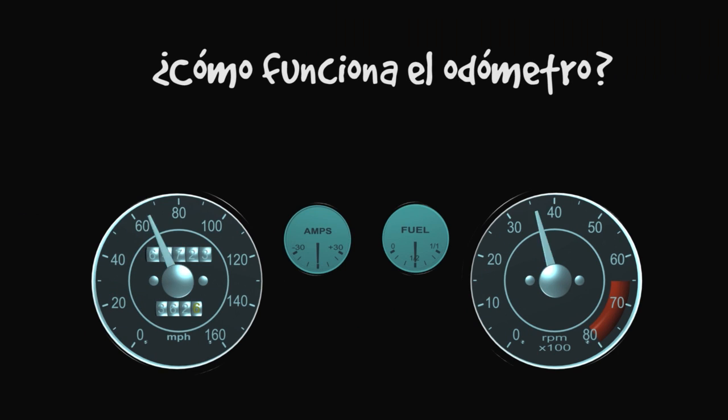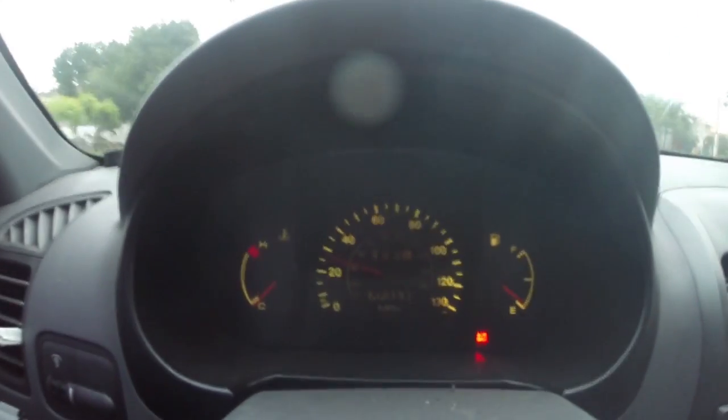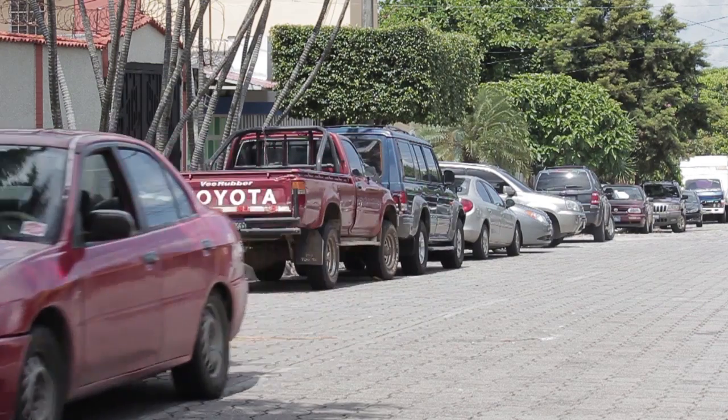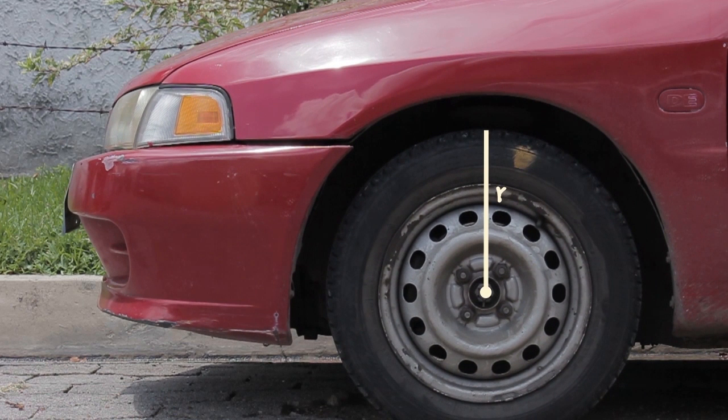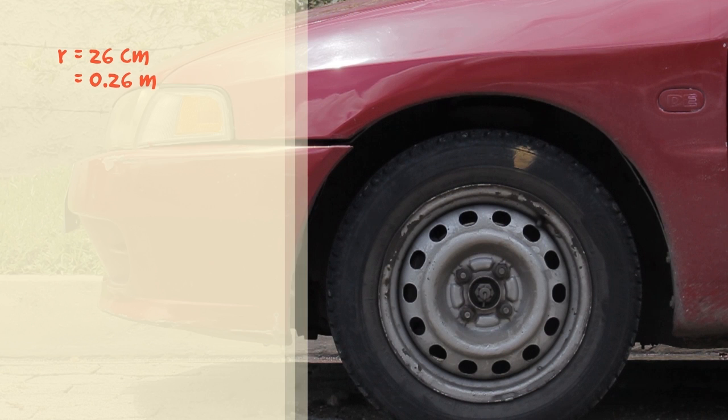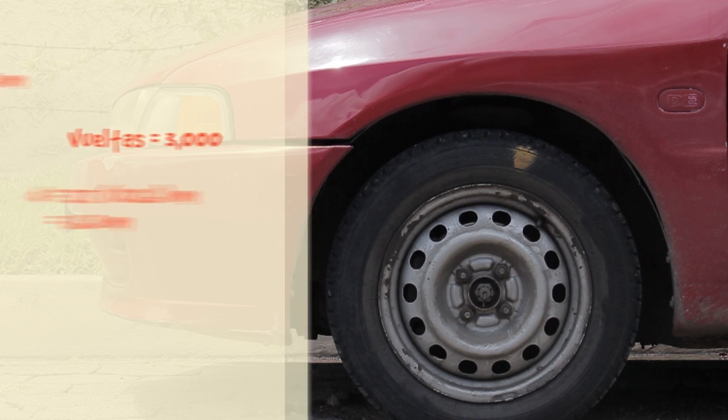¿Cómo funciona el odómetro? Una de las bondades que nos presenta el conocimiento del perímetro de la circunferencia se puede utilizar en el cuenta kilómetros de un automóvil. Solo se necesita saber cuál es el radio de la llanta y la cantidad de vueltas que ha dado al desplazarse entre dos puntos. Es decir, si el radio mide, por ejemplo, 0.26 metros y el número de vueltas es 3,000, el auto recorrerá 1.63 metros en una vuelta. La distancia recorrida será 4,890 metros. El auto ha recorrido casi 5 kilómetros.